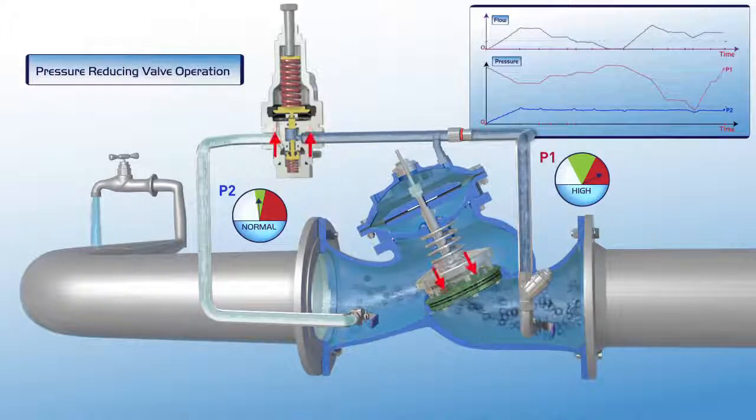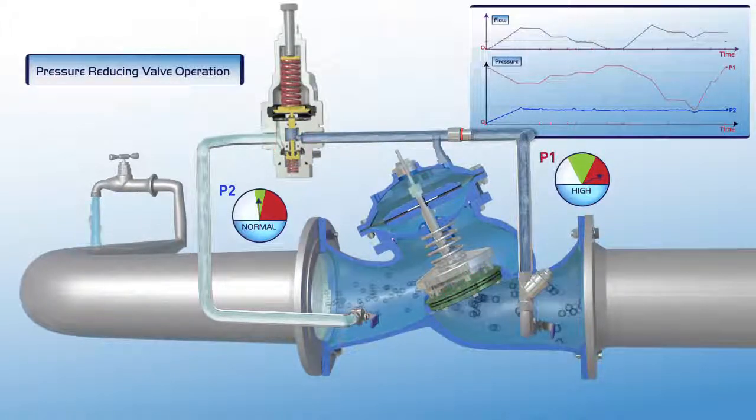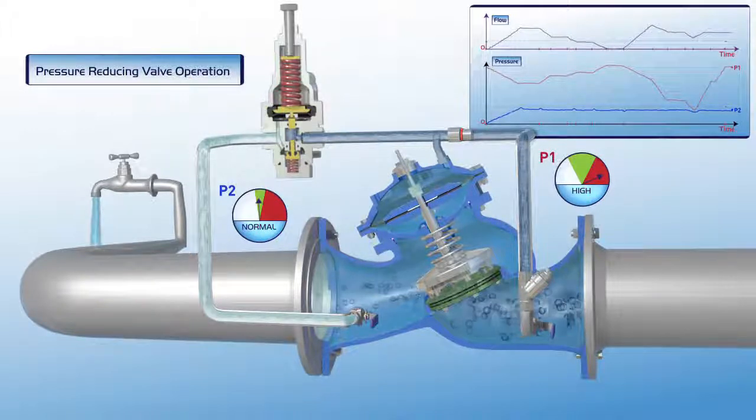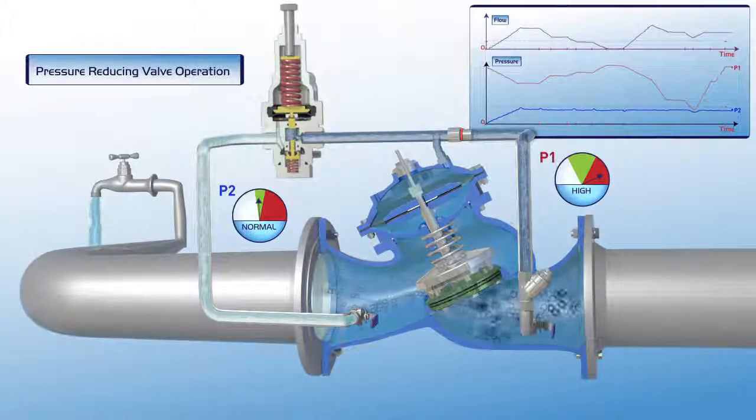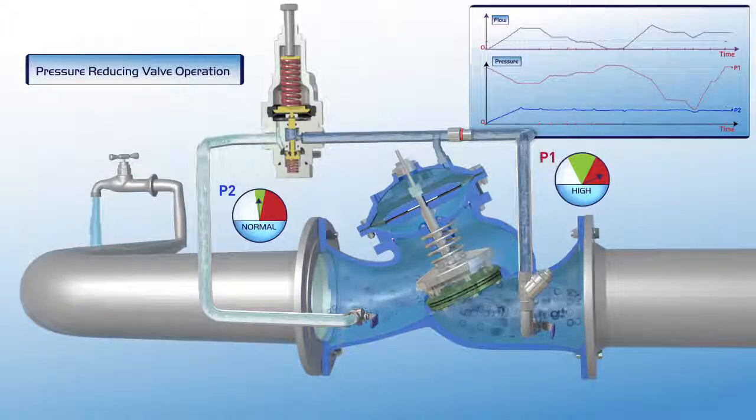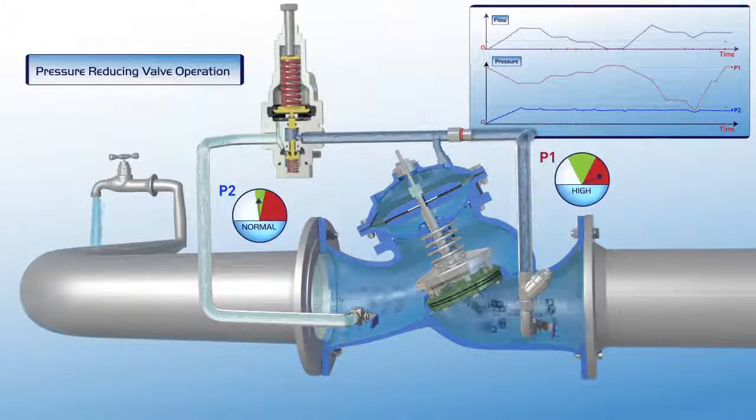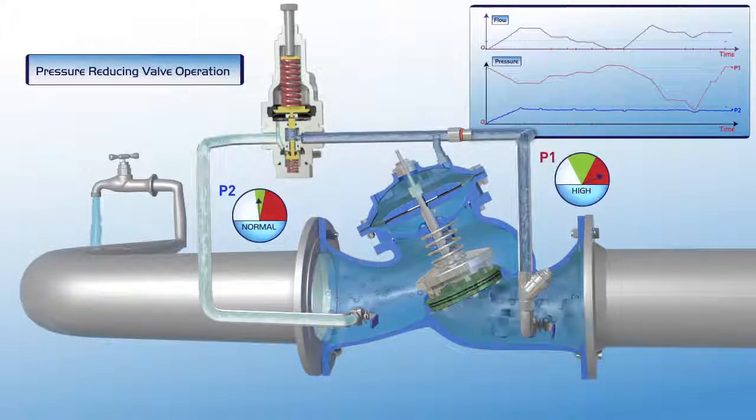As shown on the chart, the valve maintains a constant downstream pressure, even when the upstream pressure rises to a very high level. As illustrated in this film, the Burmad pressure-reducing control valve reduces higher upstream pressure to lower constant downstream pressure, regardless of fluctuating demand or variations in upstream pressure.